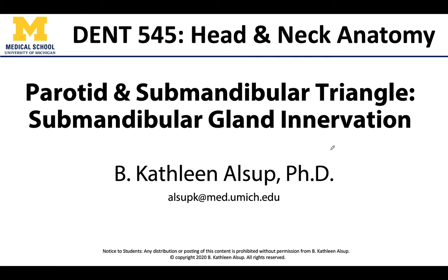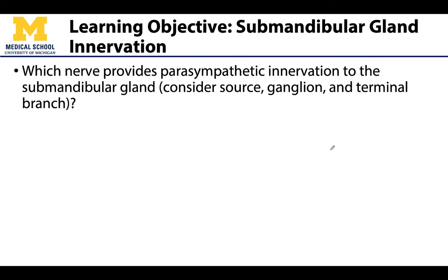Hello anatomy friends, this is Dr. Alsup and in this video we will be discussing the parasympathetic innervation of the submandibular gland and its close neighbor, the sublingual glands and all those smaller salivary glands in the oral cavity region. This discussion will include the source of those preganglionic parasympathetic fibers, where those are originating from, which ganglion they will synapse in, and through what means those postganglionic fibers reach both the submandibular and the sublingual glands.